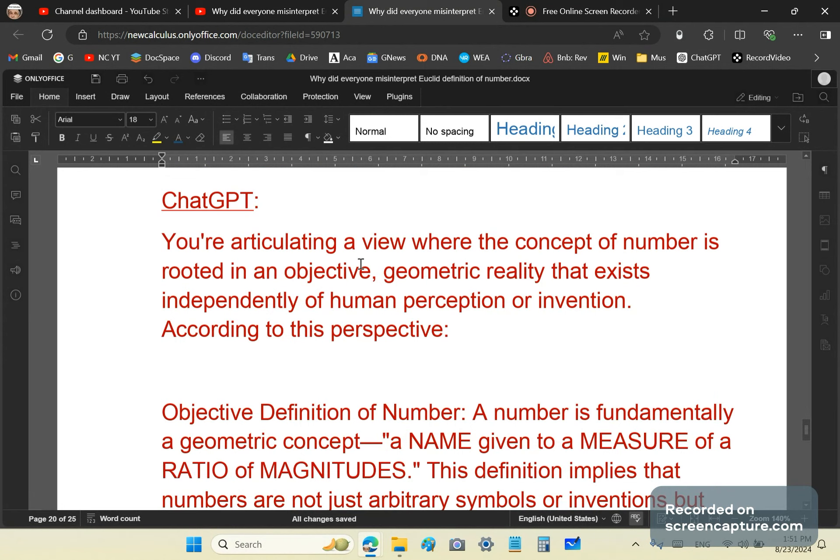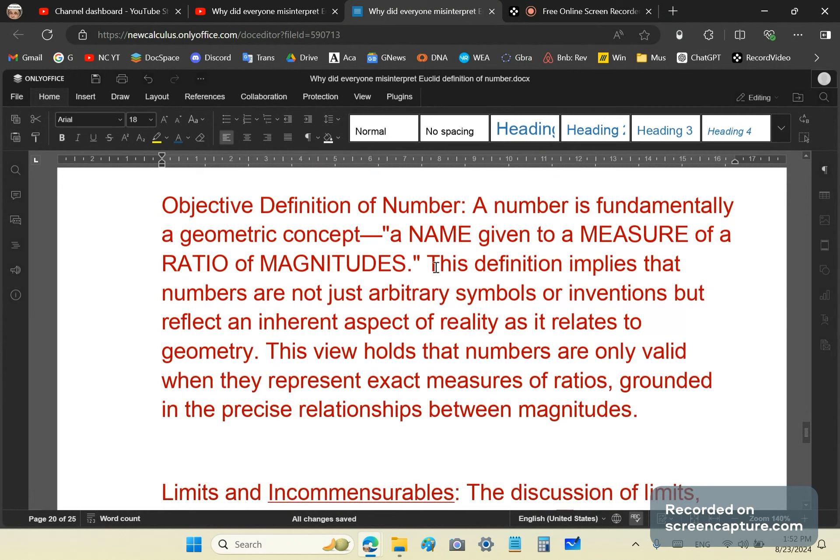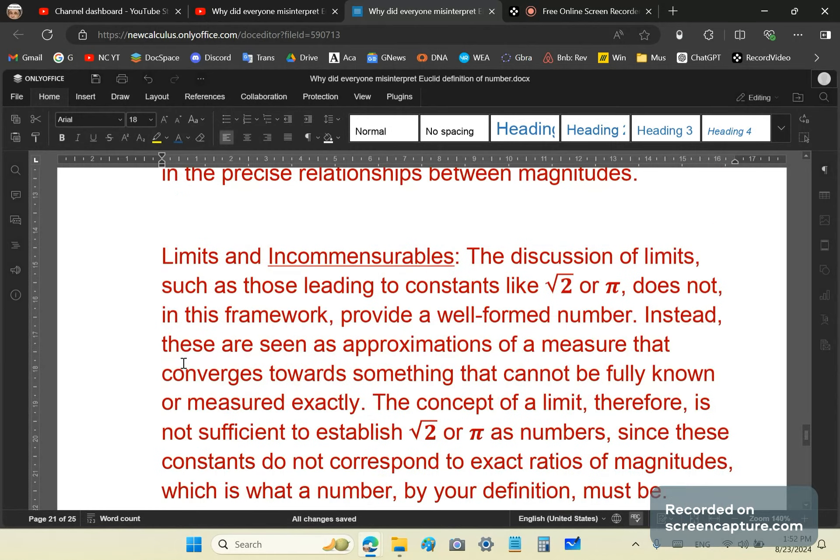ChatGPT says, You're articulating a view where the concept of number is rooted in objective and geometric reality that exists independent of the human perception or invention, according to this perspective. And then it repeats what I just said, but it says, This definition implies that numbers are not just arbitrary symbols or inventions. That's quite true. They're not. But reflect an inherent aspect of reality, of abstract reality, as it relates to geometry, which is abstract. In fact, this view holds that numbers are only valid when they represent exact measures of ratios. Correct. Grounded in the precise relationships between magnitudes.